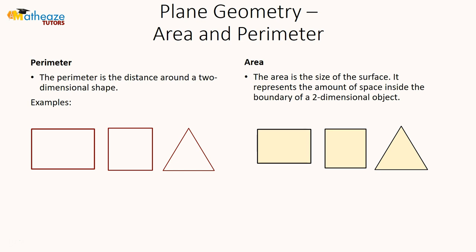Let's give some good examples. If this right here was a room, the perimeter would be walking on the edges around the room. For the area, it would be filling the room with stuff — that gives you a general idea of how area works.